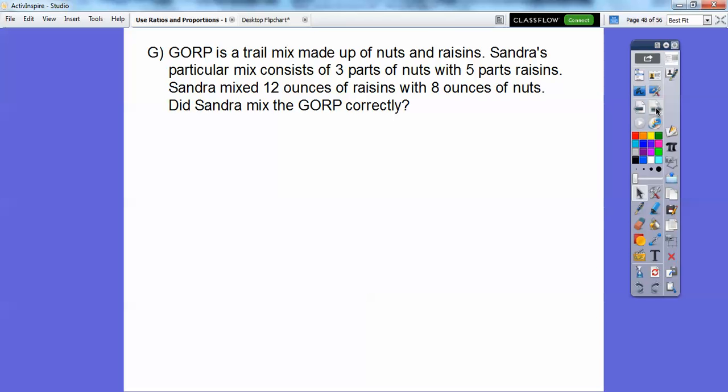So a particular type of gorp is made up of nuts and raisins here. So Sander mixes, Sander's particular mix consists of three parts of nuts with five parts of raisins. Here's our ratio, three to five, okay, or three over five.